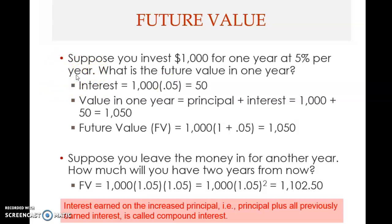The third known element is the term — one year. You invest for one year. The unknown element is the future value. The question tells you the unknown: what is the future value in one year? So present value, interest rate, and term are known; future value is not known, and you solve for it.